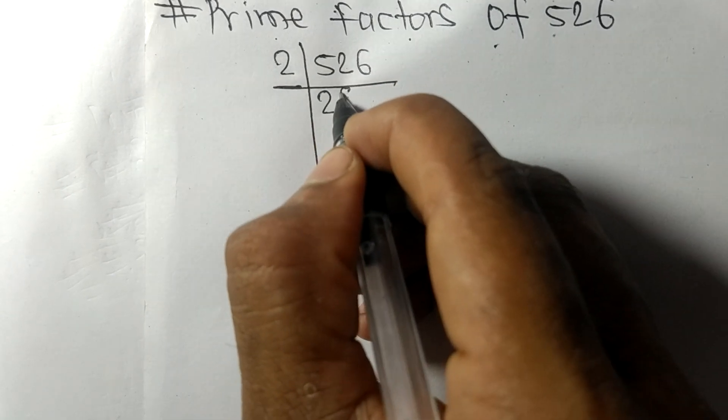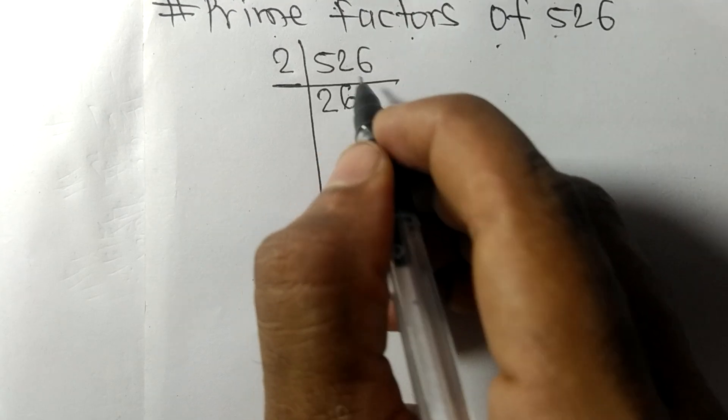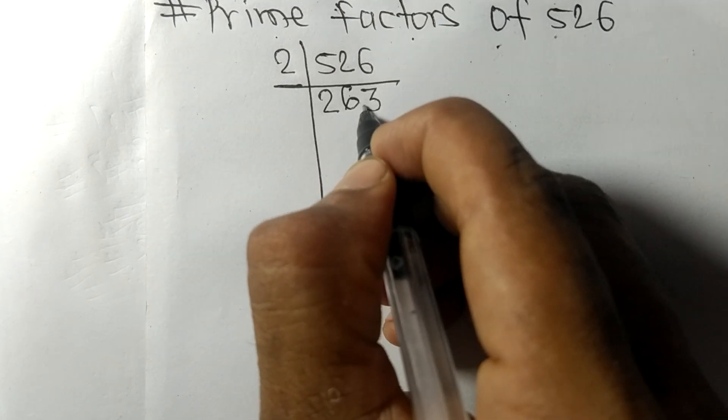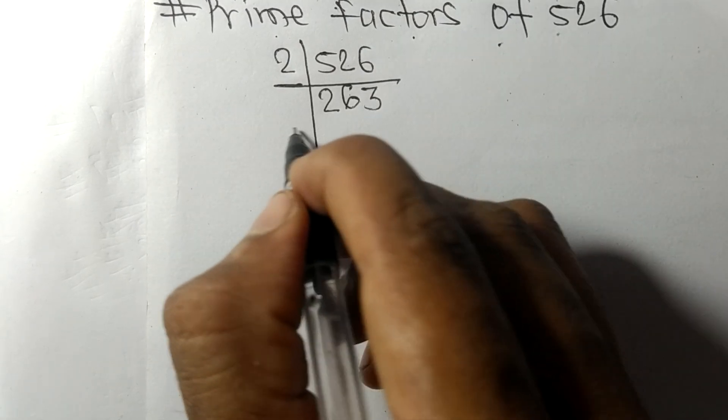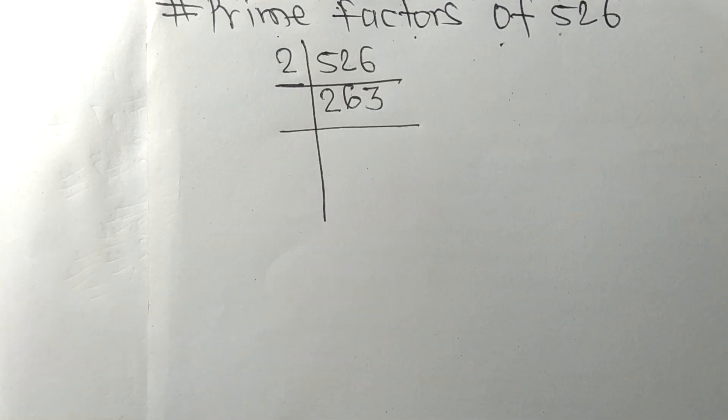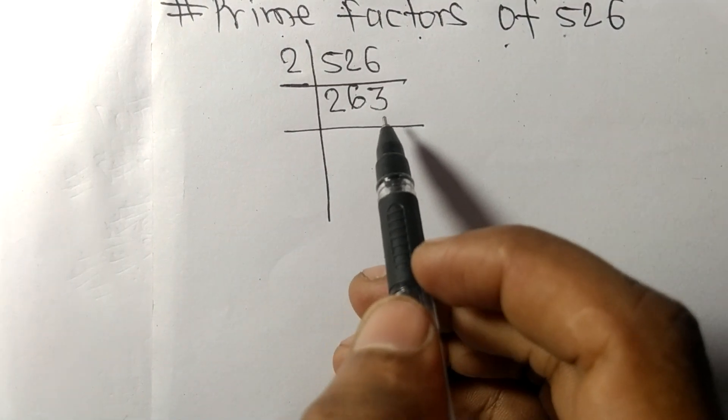2 times 6 means 12, and 2 times 3 means 6. So now we got 263.